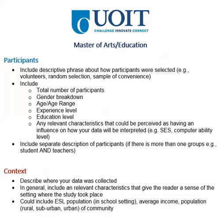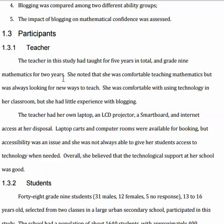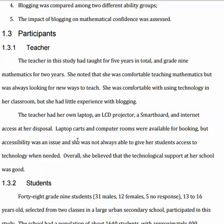So let's go to some concrete examples. Here, the student has two types of participants: a teacher and students. A description of the teacher is provided about her years of experience, her comfort level with mathematics, and her experience with blogging — important to this study — along with the tools she had available: a laptop, a projector, and a smart board. You could probably also include age and education level. Think about collecting all that data ahead of time so you aren't caught without it.